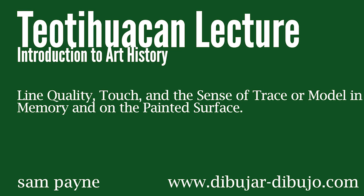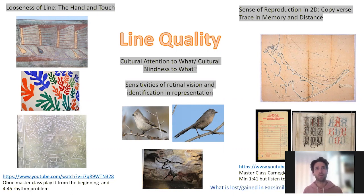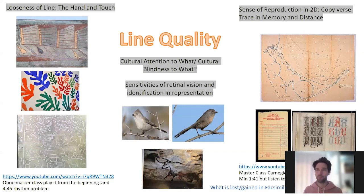Here we are with another Teotihuacan section. I want to outline the idea of line quality with respect to Teotihuacan artworks. If you haven't watched the other videos, Teotihuacan is from about 150 BC to 700 AD, lasted about 800 years. It has this incredible apartment complex nature to it, with all these paintings, even though we've only excavated two percent of the apartment compounds. Today I want to discuss the idea of line quality.